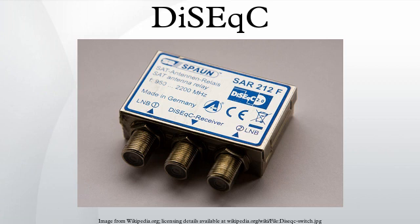DiSEqC is also compatible with the actuators used to rotate large C-band dishes if used with the DiSEqC positioner. DiSEqC uses a pulsed 22 kHz sine wave at 0.65 V peak-to-peak. The 'D' part of the name refers to the digital nature of the signals used by the protocol and does not imply anything about the transmission that the dish is used to receive. DiSEqC may be used with both digital or analog satellite systems.